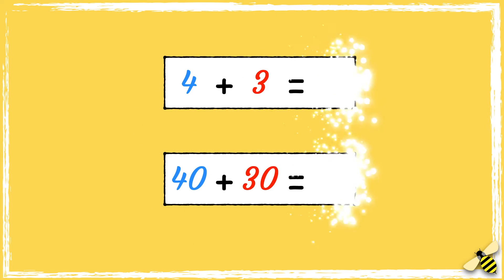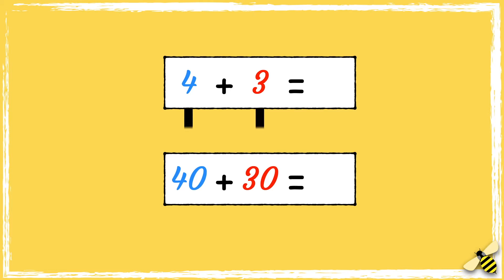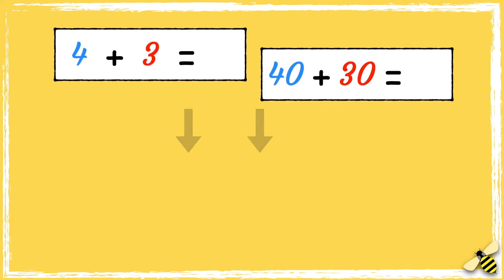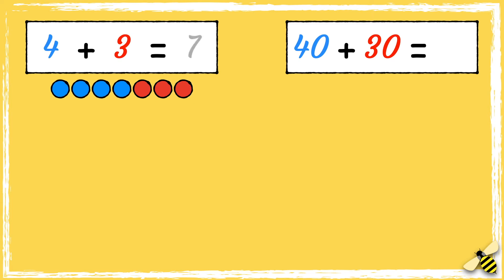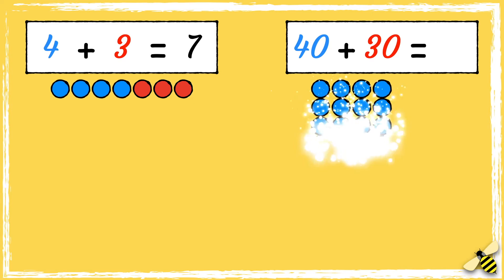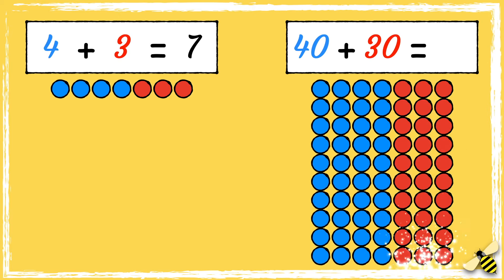Here are two number sentences. What's the same about them? And what's different? Both number sentences have the digits 4 and 3, but the second number sentence is 10 times greater than the first. We know that 4 add 3 equals 7, so 40 add 30 must equal 70.